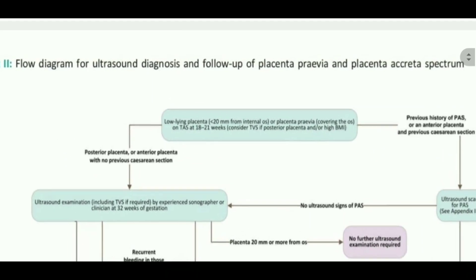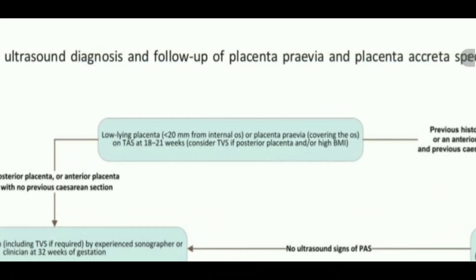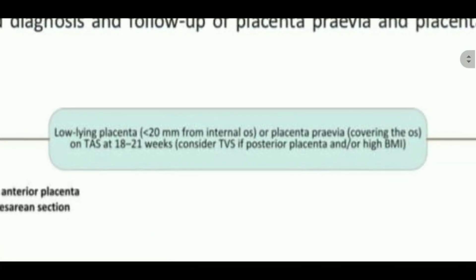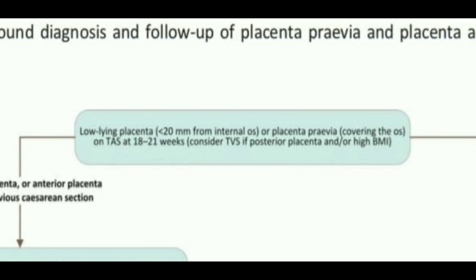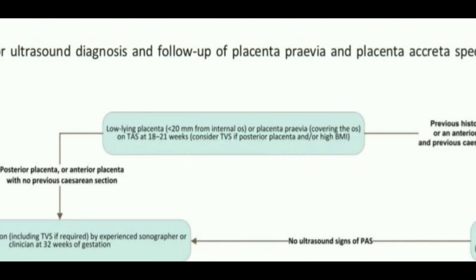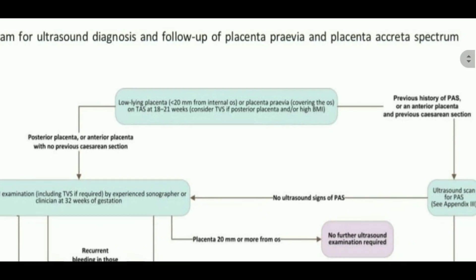Starting from the top of the flow diagram: the patient is at 18 to 21 weeks and has had routine antenatal care. At that scan, if we find a low-lying placenta — where the placental edge is less than 20 mm from the internal os — or placenta previa, where the placenta covers the os, we proceed further. We also have to consider TVS if there is posterior placenta previa or high BMI.